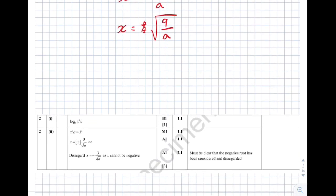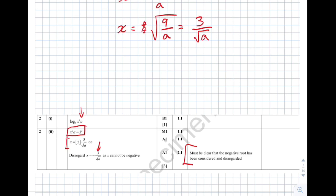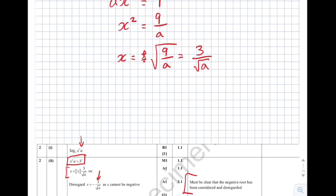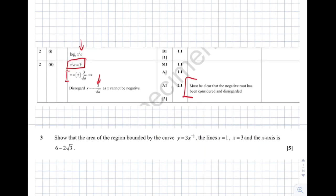Looking at the mark scheme: one mark for the first step, one for putting everything to the power of 3, and one for making x the subject. The answer is x equals plus or minus 3 over root a. Importantly, the mark scheme says you must show you've considered and then discarded the negative root — you can't just forget to write the plus or minus. You need to have it there and then explicitly get rid of it.